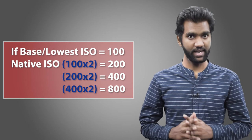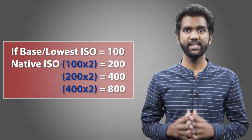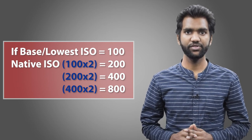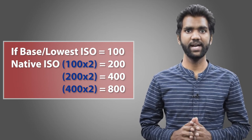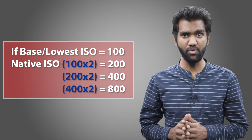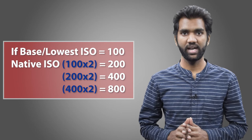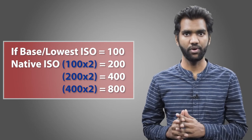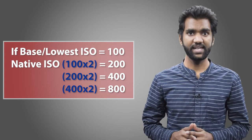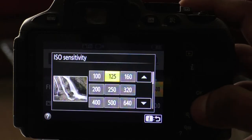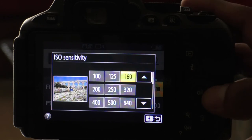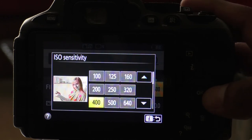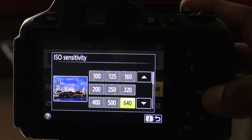If your base ISO is 100, then the upper native ISO settings go up by the power of 2, like 200, 400, 800, and so on. The steps in between, like 125, 160, 250, and 320, are called non-native.